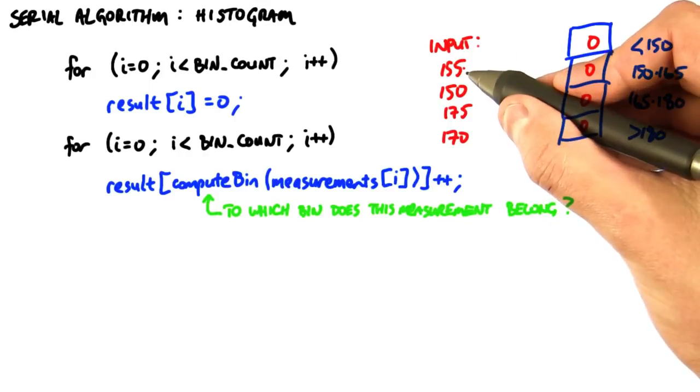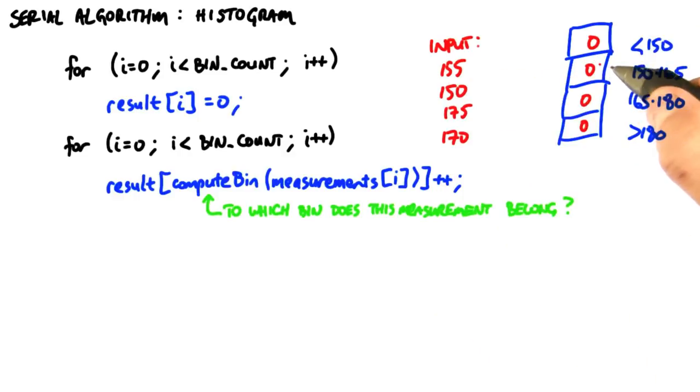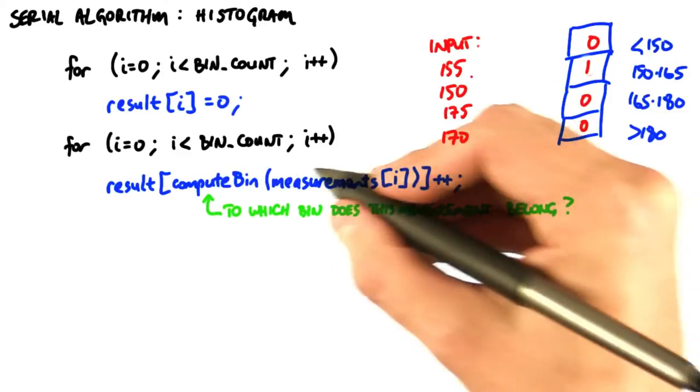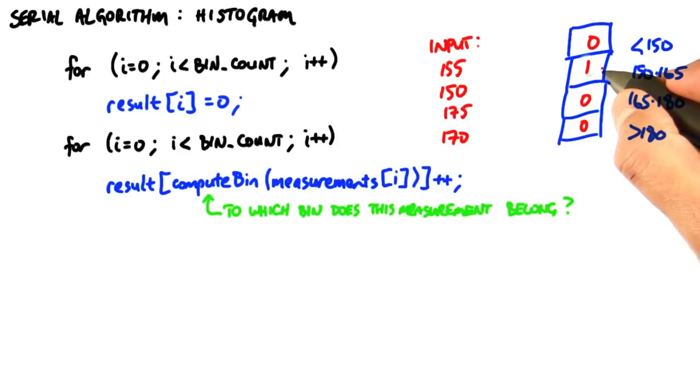First we'll consider 155, compute bin will tell us it's in this bin right here. So, we'll increment its value to 1. Then we look at 150, compute bin will tell us its value is in this bin again, and we'll increment its value to 2.